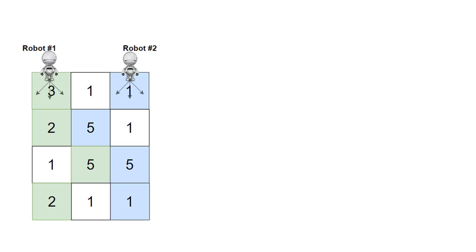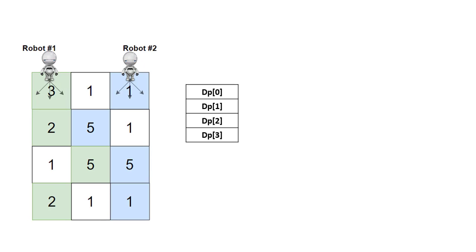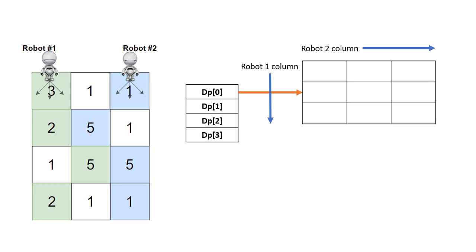This hint helps us a lot. For the first example, as the hint states, we need a DP array of four rows. Since it is a three-dimensional array, in each row there will be a two-dimensional array of size n × n — that is number of columns × number of columns — wherein the rows define robot 1's column position and the columns define robot 2's column position.